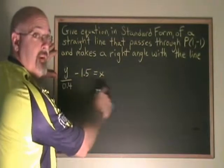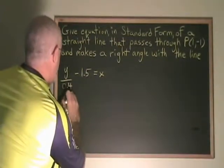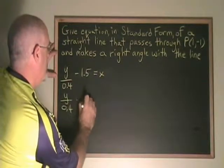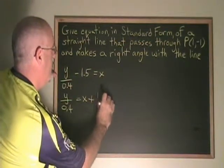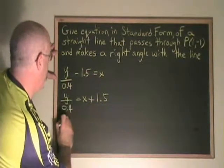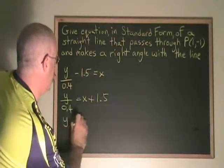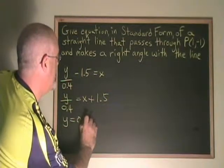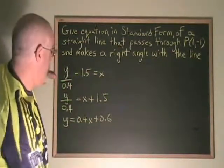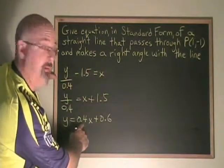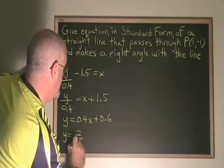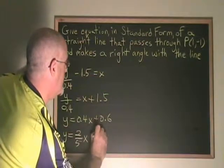Moving the negative 1.5 to the other side, I have y over 0.4 equals x plus 1.5. Then multiplying everything by 0.4, I have y equals 0.4x plus 0.6. Converting to fractions so I can see the slope in the form of a fraction, I have y equals 2/5 x plus 3/5.